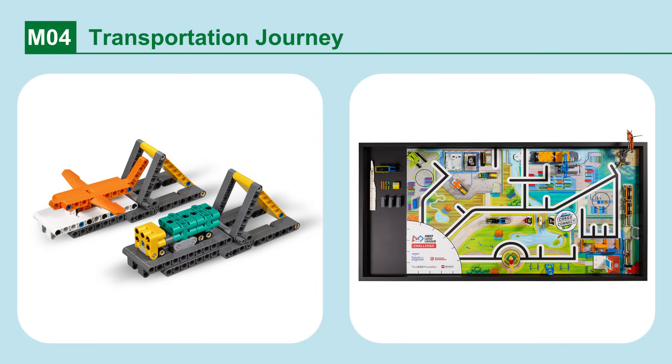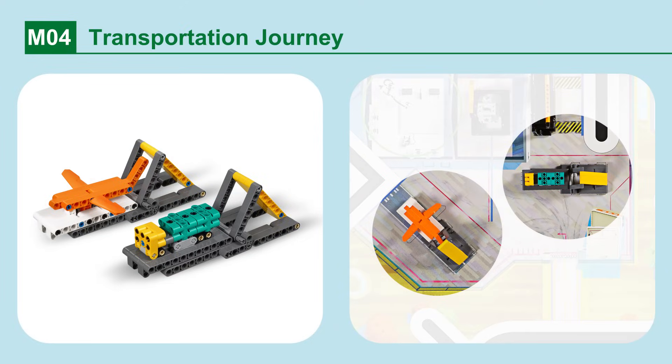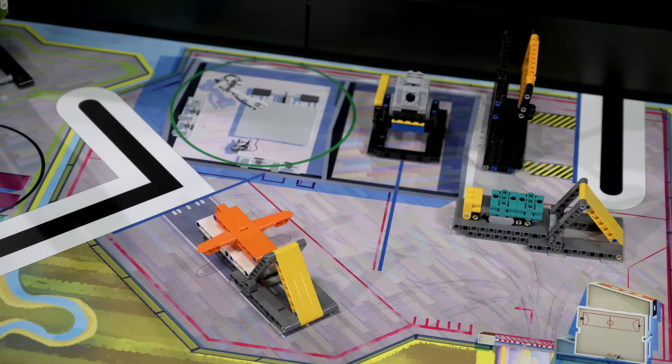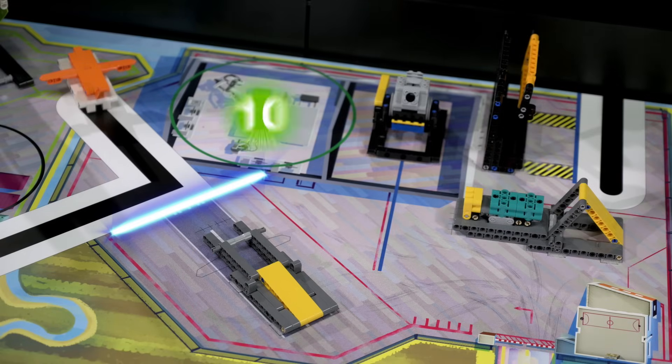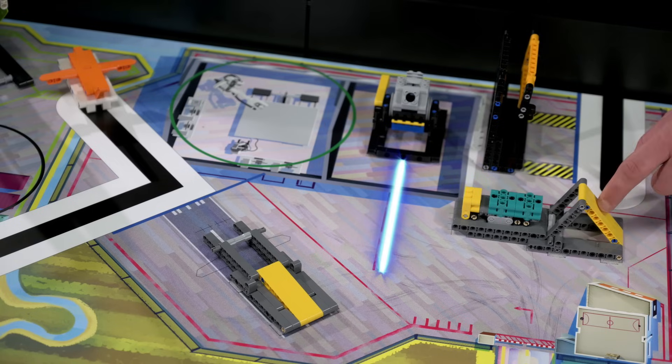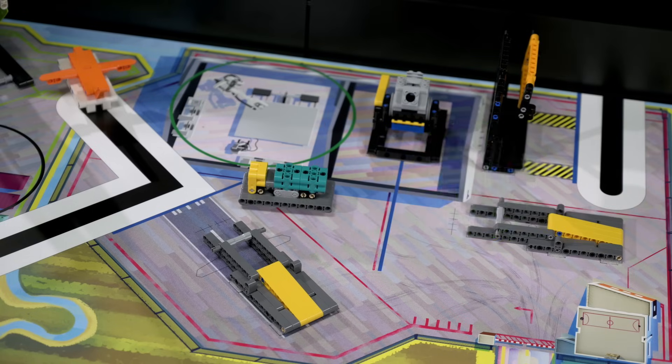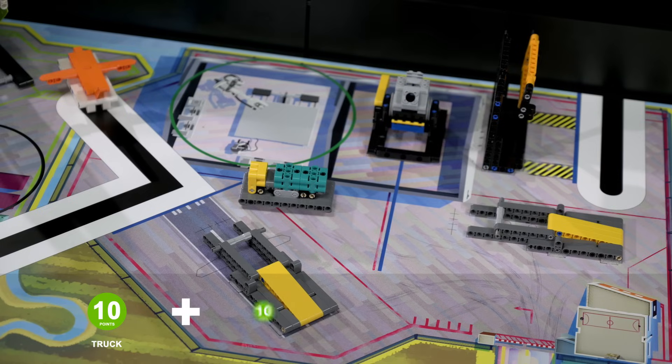Mission 4. Transportation Journey. The airplane and truck must reach their destinations. If the airplane is completely past its blue end line on the mat. If the truck is completely past its blue end line on the mat. A bonus is scored when both tasks are completed.